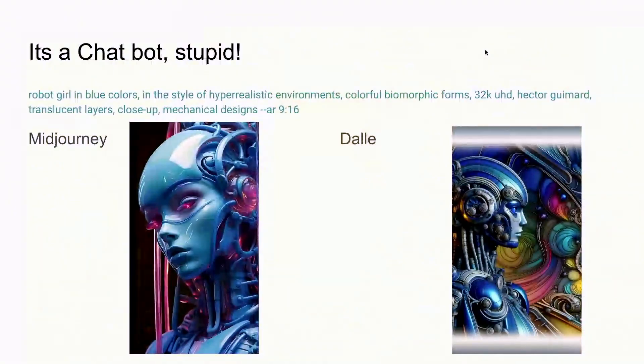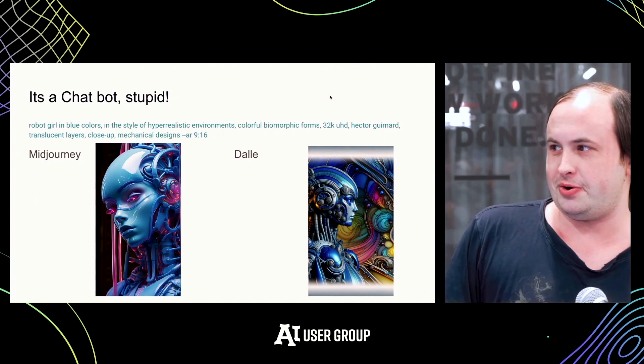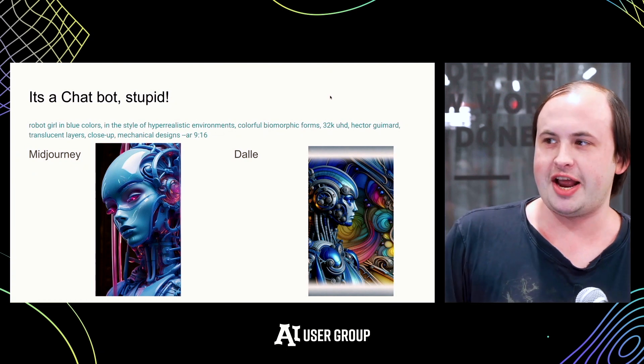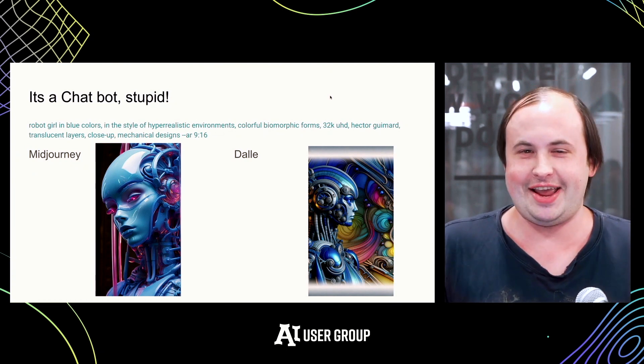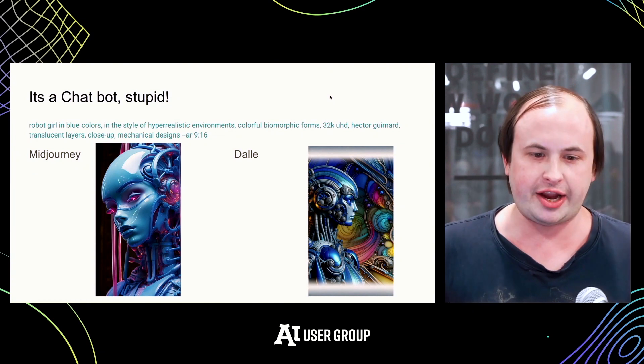So why would you use DALL-E 3 if it doesn't have access to those open-source features? The biggest reason is that it effectively solves a lot of the prompt engineering problem. People have seen prompts like 'robot girl, blue colors, hyper realistic environment, 32K, Hector Guimard style, close-up mechanical design' — it's become a whole career to be a prompt engineer, typing magic words into a black box. You can still do that with DALL-E 3, but you can also just say 'I want an image of a robot girl' and it will give you a good image.